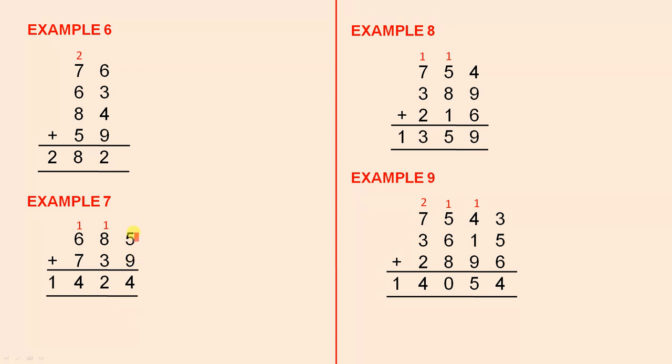Example 7, 9 plus 5 is 14, 4 ones and 1 ten. 8 plus 1 is 9, plus 3 is 12. That's two tens and 100. 7 plus 6 is 13, plus 1 is 14, so it's 1,424.